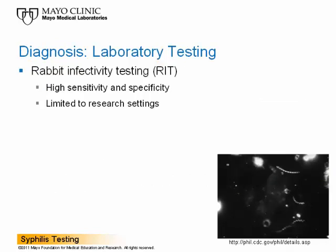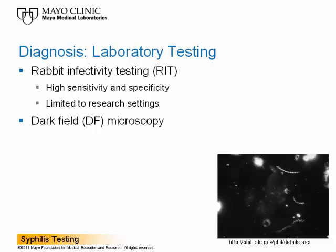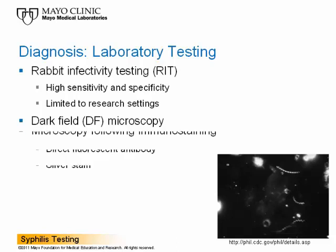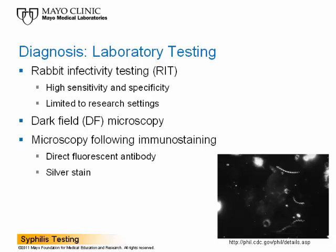There are a number of different laboratory methods developed to assist in the diagnosis of syphilis, but many are not routinely used in the clinical laboratory. The rabbit infectivity test, or RIT assay, demonstrates high sensitivity and specificity for detection of Treponema pallidum; however, this method is time-consuming and laborious and is limited to research settings. A second method is dark field microscopy, which allows for the visualization of the spirochete in clinical samples. Dark field microscopy possesses relatively high specificity, but is not routinely performed in many clinical labs due to the low prevalence of positive samples. Similarly, microscopy following immunostaining, such as direct fluorescent antibody or silver staining, can be applied to tissue samples, but is also uncommon in clinical labs.